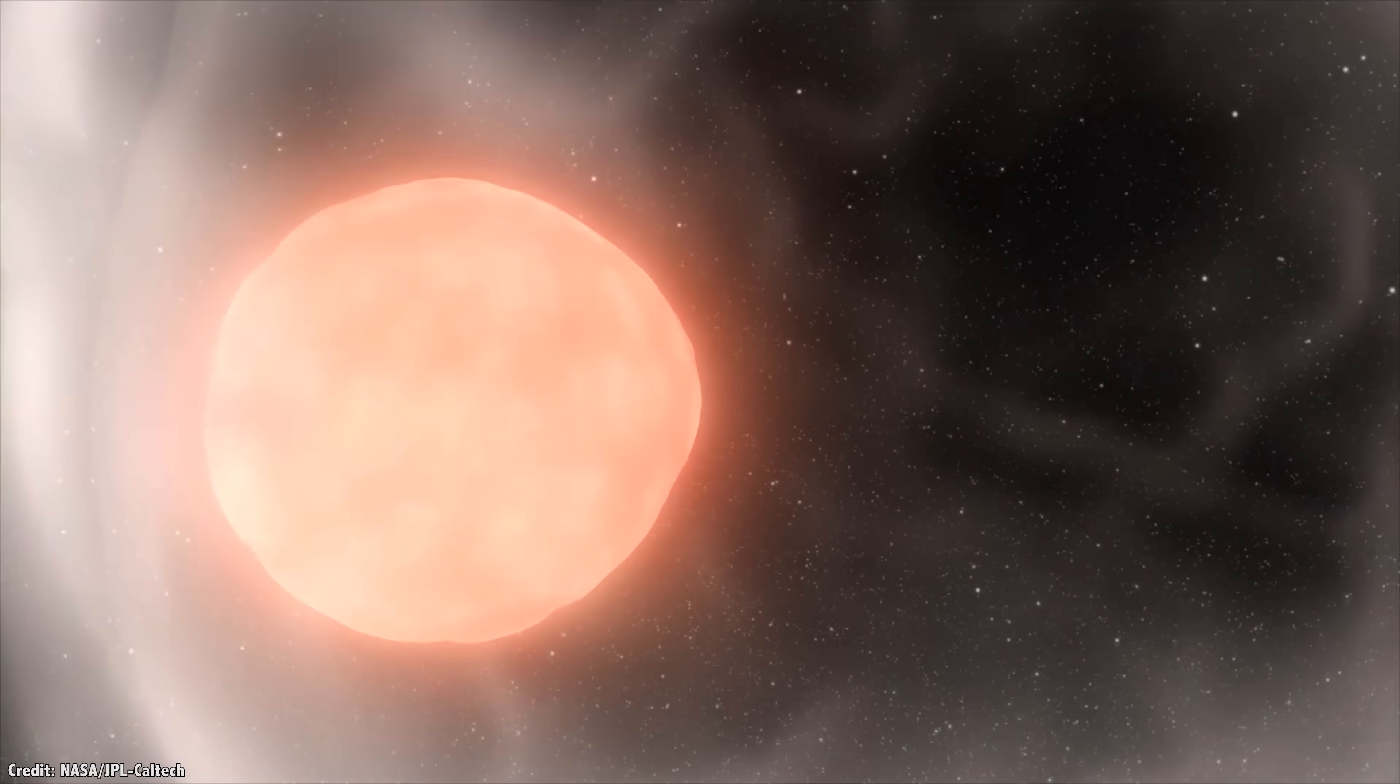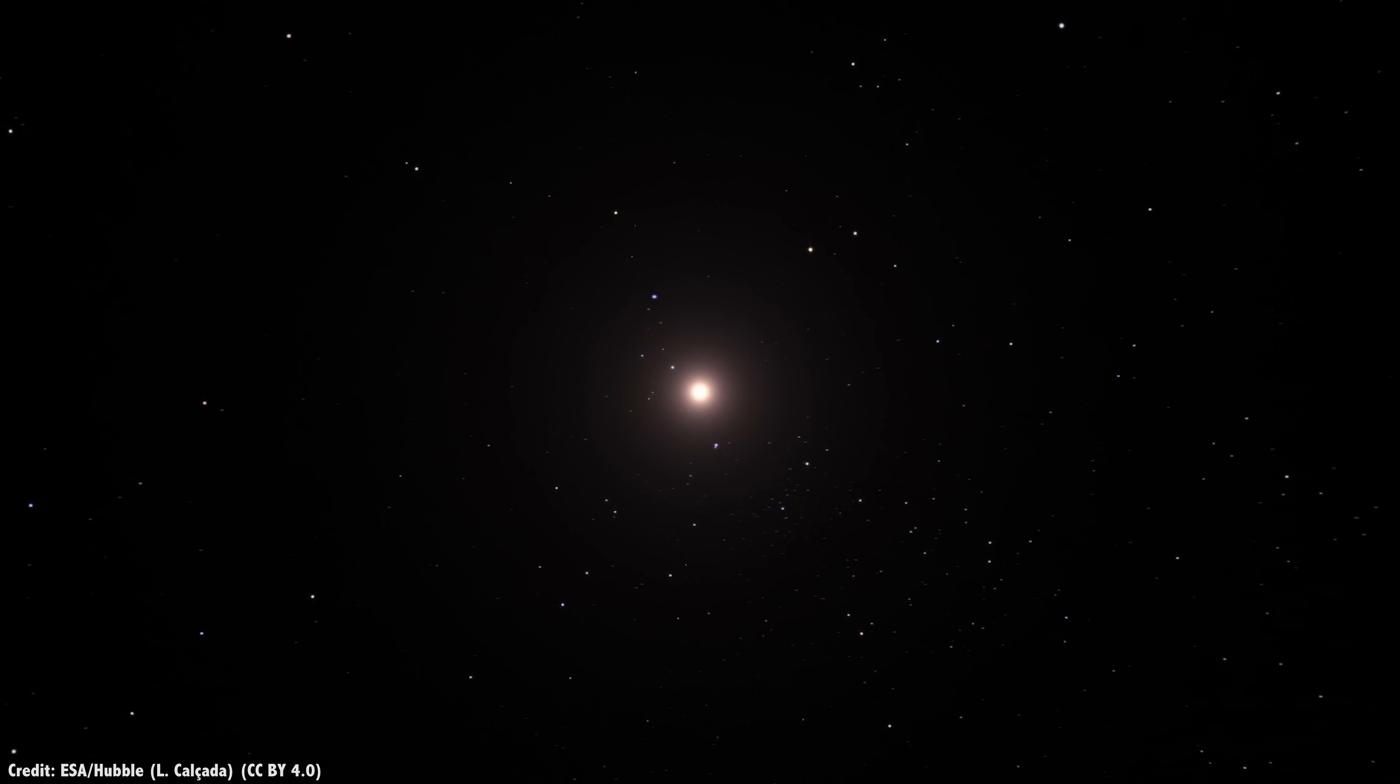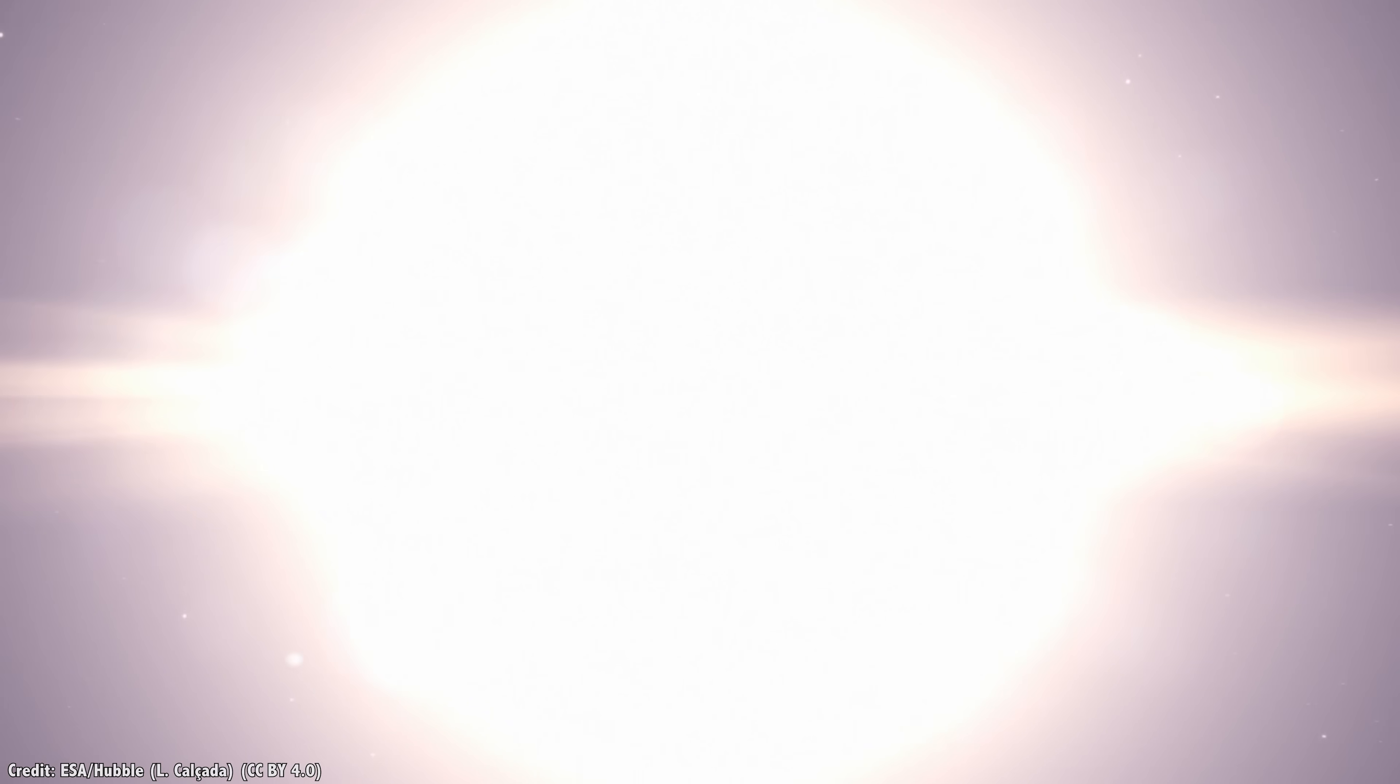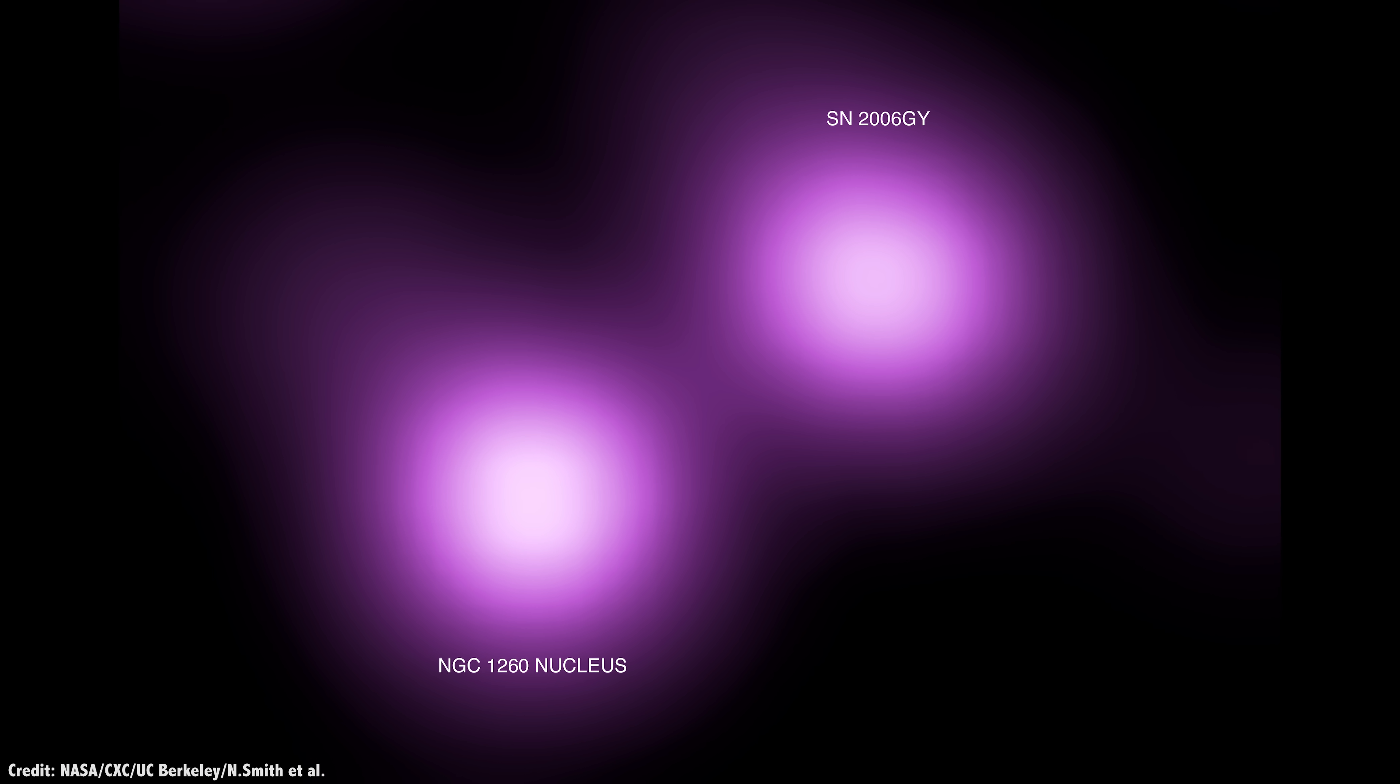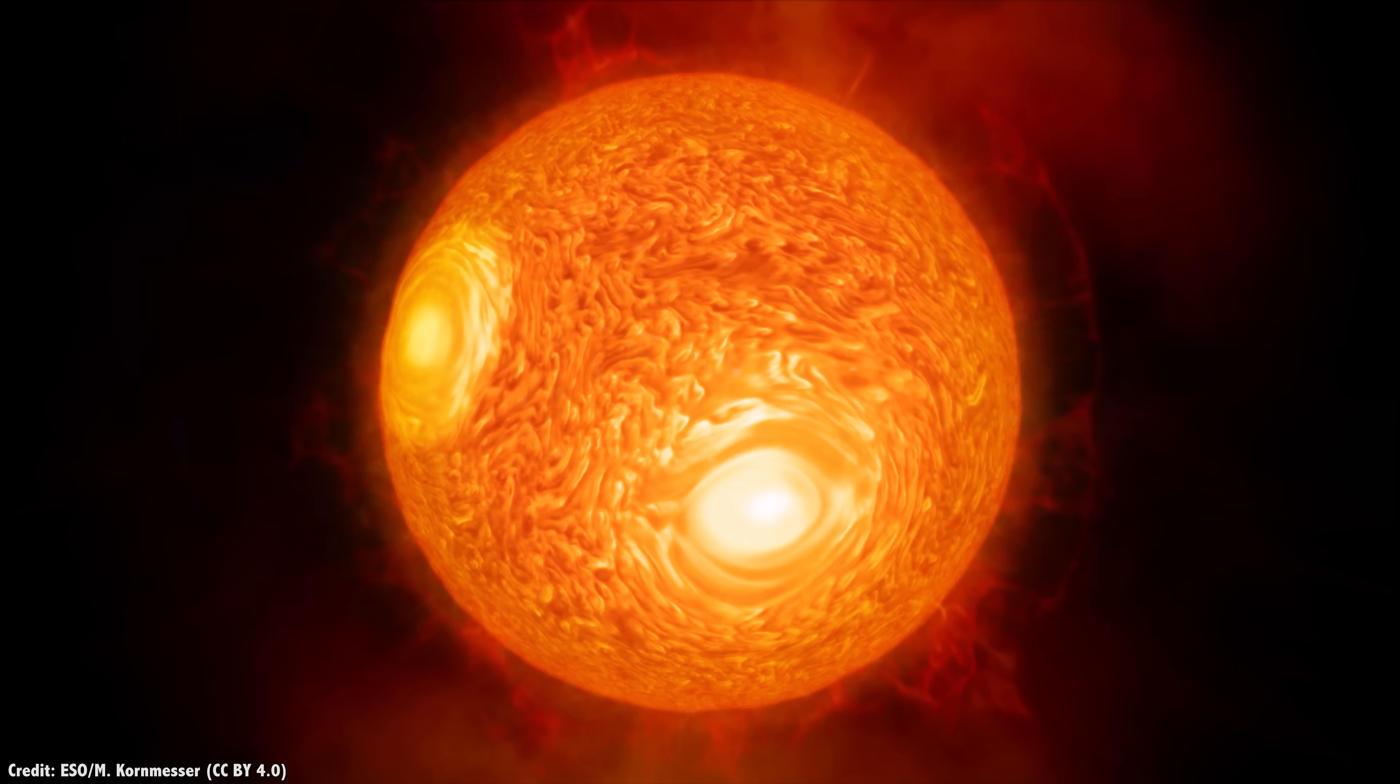Supernova 2006 GY didn't fit any of the models for either type of explosion. It didn't look like either an exploding white dwarf or a core-collapsed supernova. More than a decade ago, astronomers used the Chandra X-ray Observatory to rule out a white dwarf exploding into a hydrogen-rich environment. Even though it was bright in many different wavelengths, it was relatively dim in the X-ray spectrum.